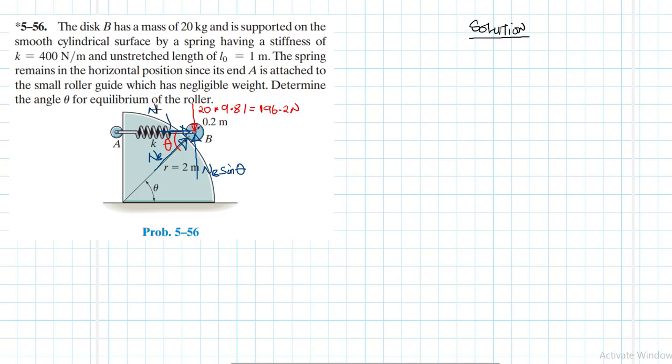We'll have another component like so. This one is going to be equal to NB cos theta. We have another normal force to the small disk and let's call this one NA.